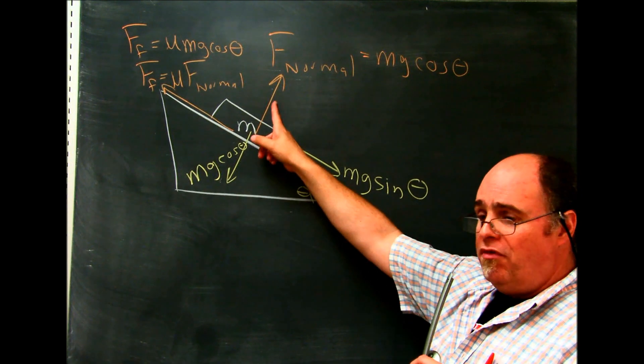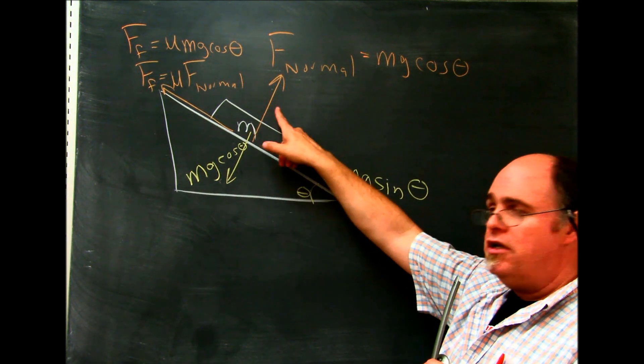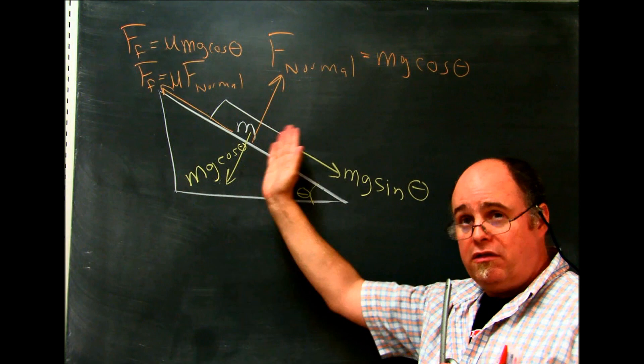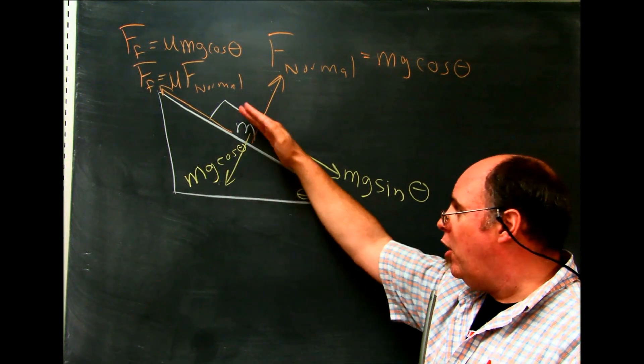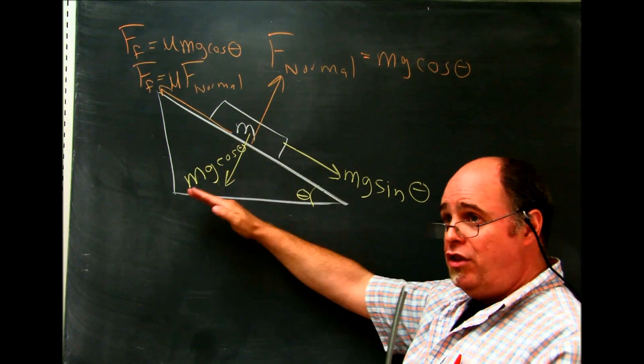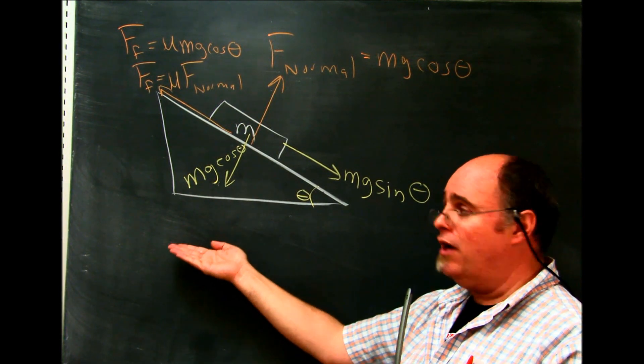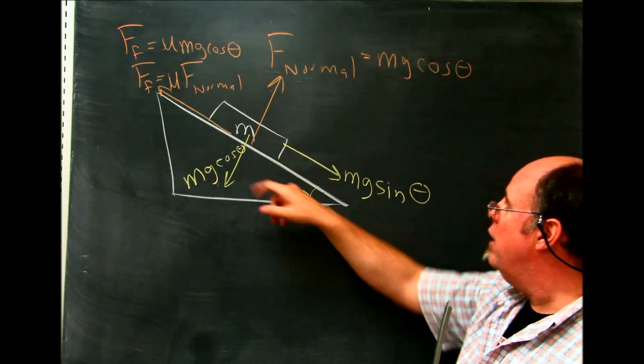We found the normal force. The normal force is equal and opposite to the perpendicular force pulling the box into the hill. This is like Newton's third law of motion. If the block is pushing into the ramp, well, the ramp then is pushing back onto the block. So we have equal and opposite here.